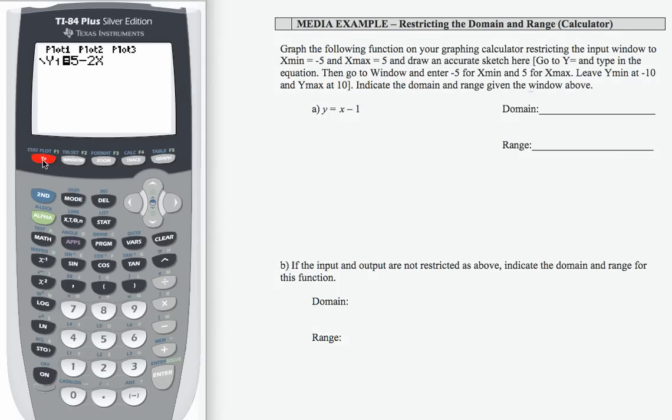We're going to go into y equals and if there's something in the y equals list go ahead and clear it. Then enter x minus 1 and what we're going to do also then is restrict the window.